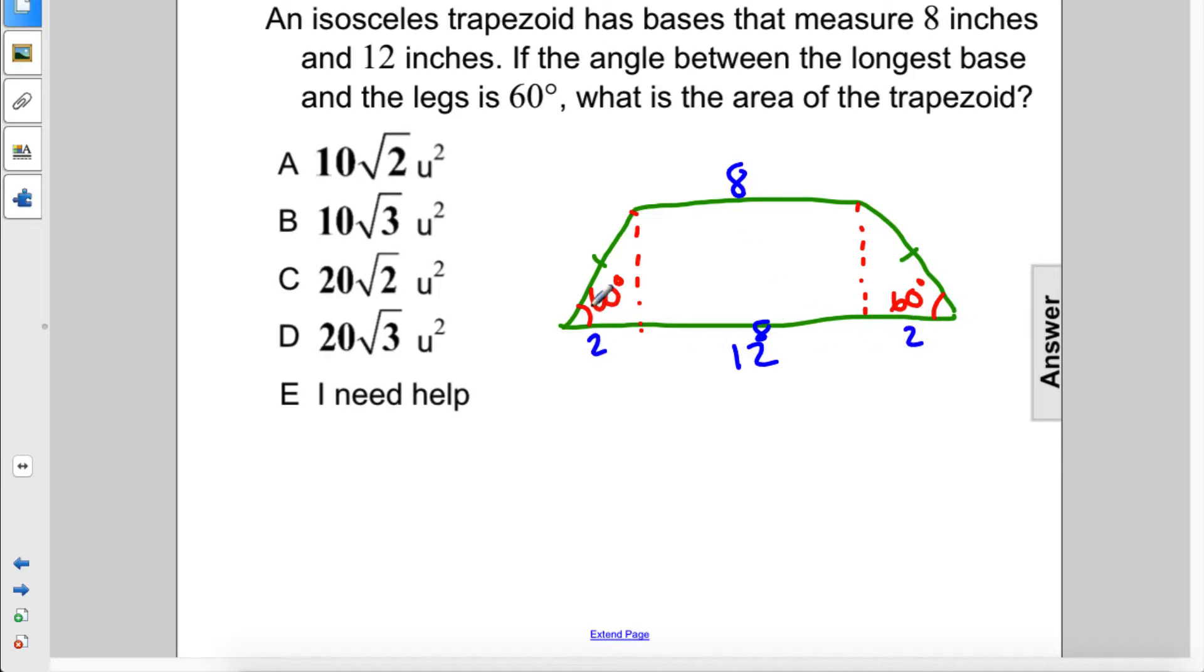So we're dealing with a 30-60-90 triangle, because these are right triangles here. So that makes this 2, this 2√3, and the hypotenuse here is 2 times the short leg, so this is 4. This is 4, this is also 2√3.